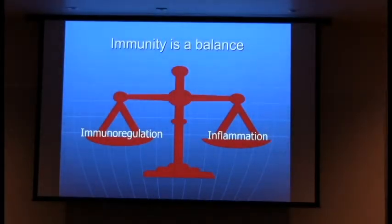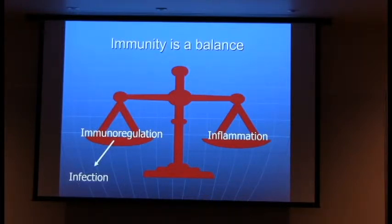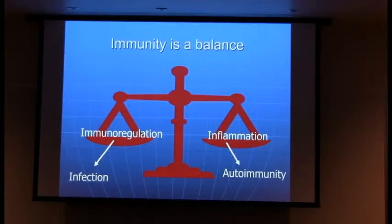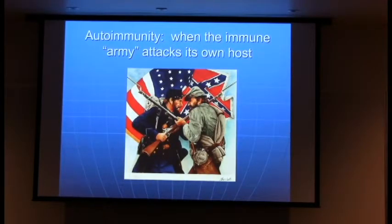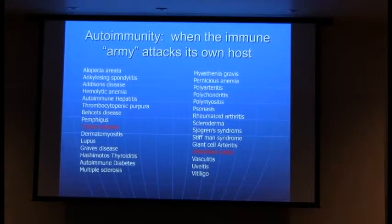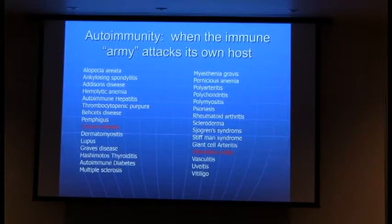There is a balance at play, because the immune system can either drive inflammation or not. Too much regulation can predispose people to infection; too little — what we call autoimmunity — means too much inflammation. You can think of autoimmunity like a civil war, because this is when the immune system starts to attack its own host. There are many different types of autoimmune diseases studied here at BRI — my piece of this puzzle is the inflammatory bowel diseases: ulcerative colitis and Crohn's disease.